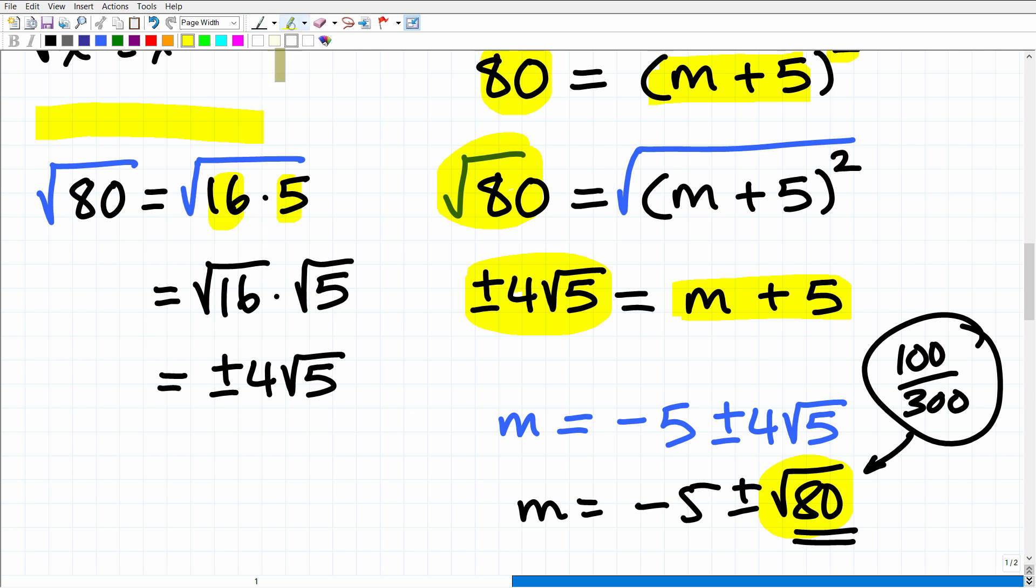The square root of 80 is equal to the square root of 16 × 5. Then we could break up these respective factors this way: √16 × √5, and the square root of 16 is equal to ±4 × √5. That is what the square root of 80 is equal to. And now all we have to do is simply subtract 5 from both sides of the equation, and we end up with our final answer: m = -5 ± 4√5.